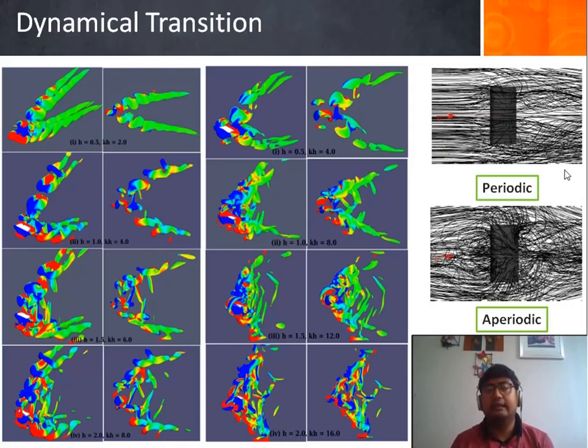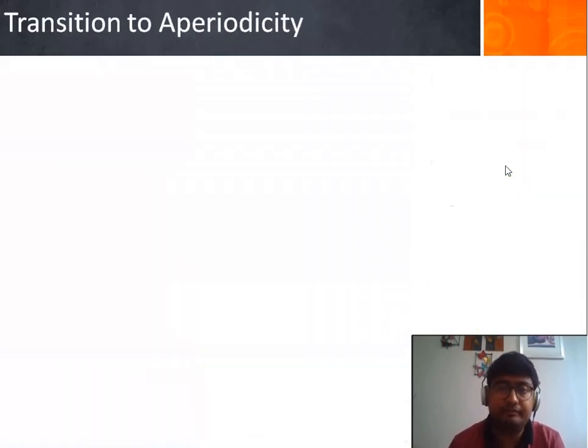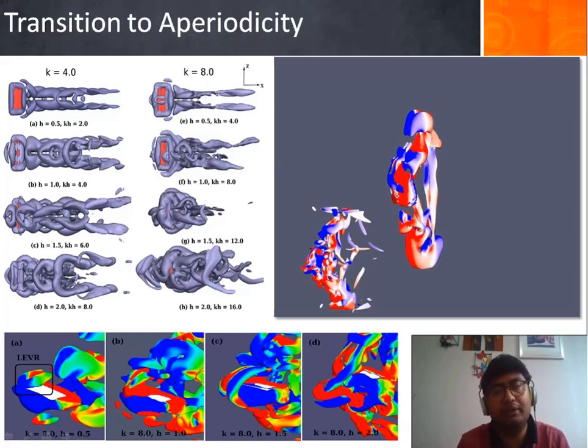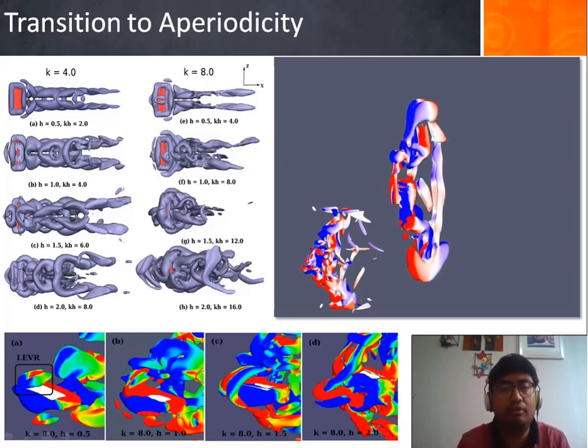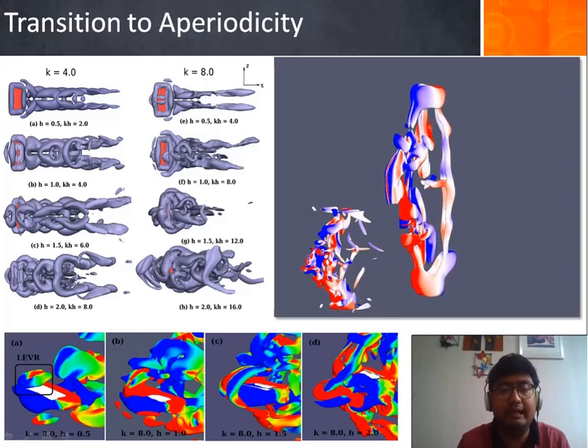However, in the aperiodic case, the near field interaction becomes very complex leading to very irregular streamline patterns as seen here. This figure and the animation gives a better visualization to the aperiodic transition. It can be observed that at K equal to 8 and H equal to 2, the wake becomes very complex and there is no repeatability in the wake structures from one cycle to another cycle.